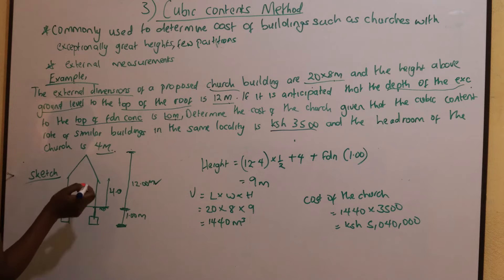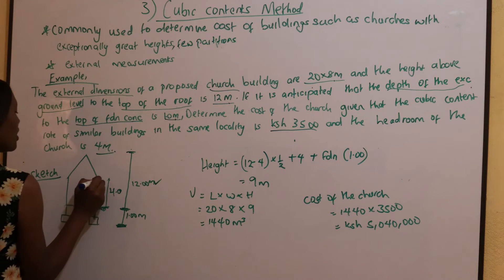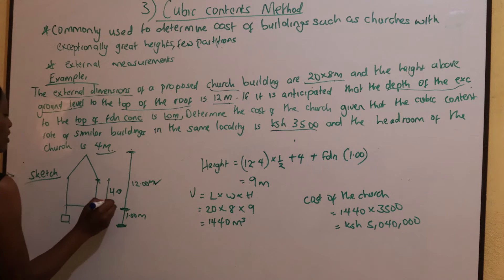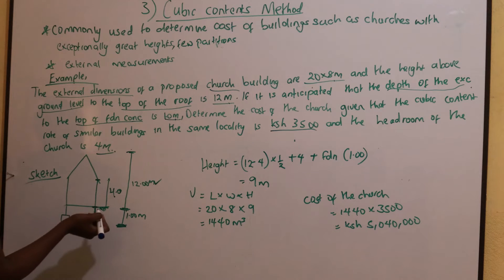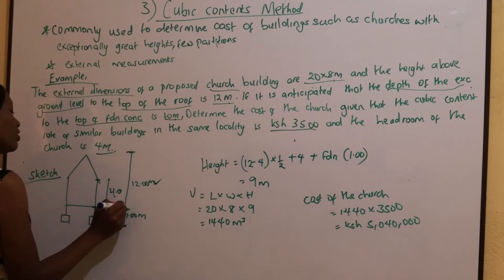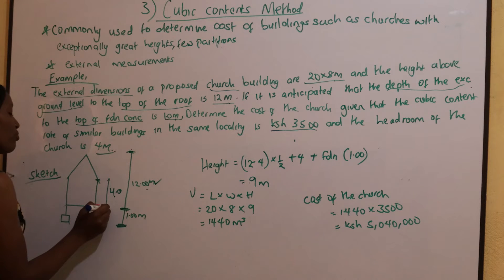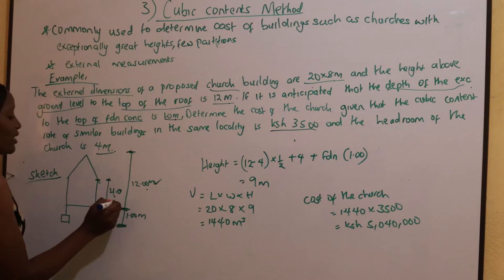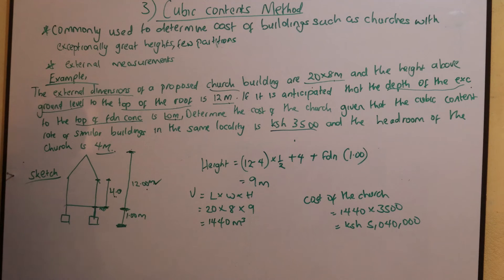We are told the headroom of the church is 4 meters. The headroom is from the ground level to the ceiling — it's 4 meters, where the roof starts. The total height from the ground level to the top of the roof is 12 meters. The headroom from the ground level to where the roof starts is 4 meters. The excavated depth is 1 meter.